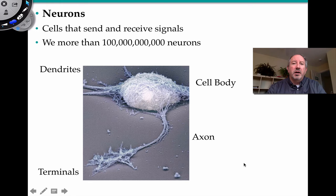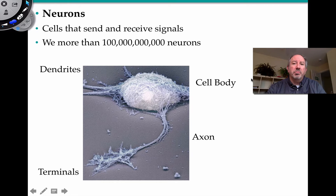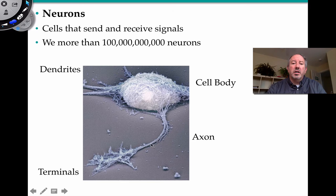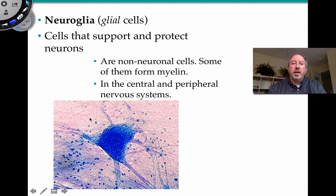Neurons are the cells that receive and send information. There are over 100 billion neurons in the body. They have large cell bodies where most of the organelles are contained, and the nucleus is located there. They have branching extensions called dendrites, which reminded early anatomists of tree branches — dendrite meaning tree. Then they have a long extension called an axon, sort of like an extension cord, and then it reaches a terminal.